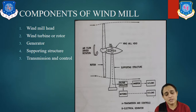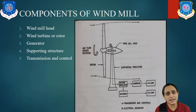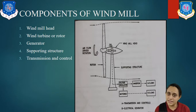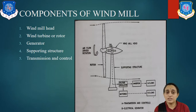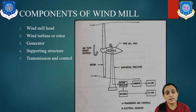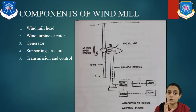The third component is the generator. Generally, an electrical generator produces electrical energy when it is rotated by the wind turbine — it converts mechanical energy into electrical form. Now, the supporting structure is very important because the complete load of the windmill, both rotating and steady, is only on the supporting structure.